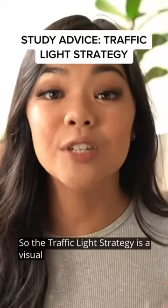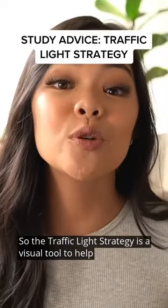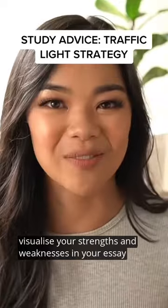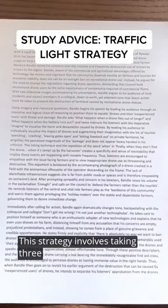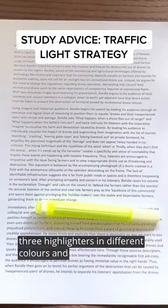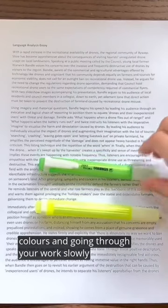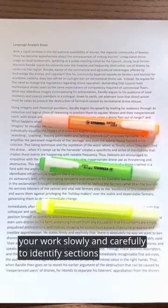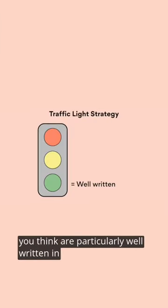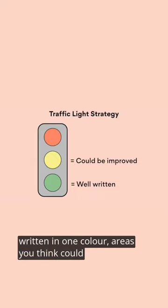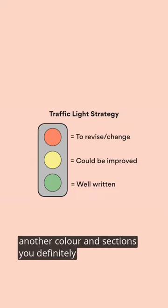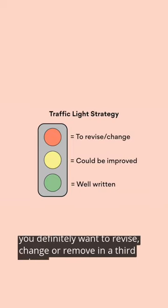The traffic light strategy is a visual tool to help you quickly visualize your strengths and weaknesses in your essay writing. This strategy involves taking three highlighters in different colors and going through your work slowly and carefully to identify sections you think are particularly well written in one color, areas you think could be improved in another color, and sections you definitely want to revise, change, or remove in a third color.